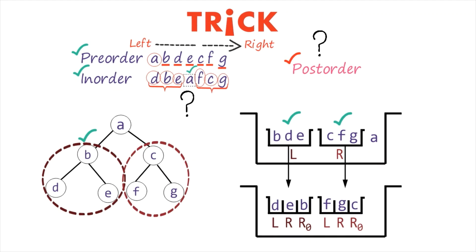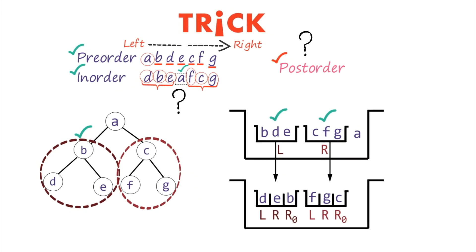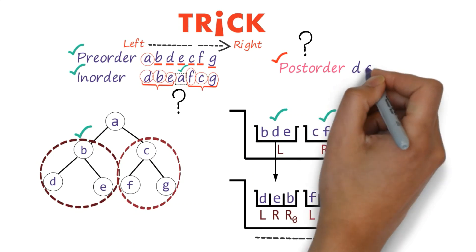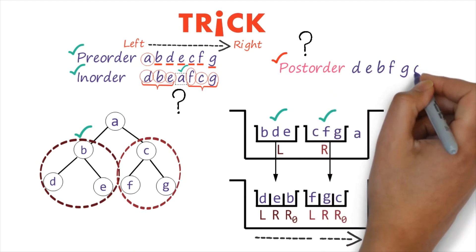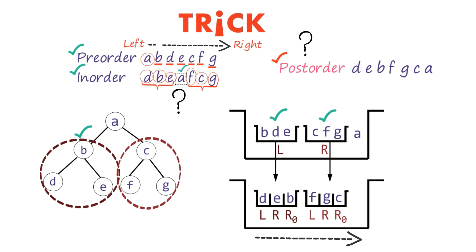The post-order traversal is obtained by reading left to right: D, E, B, F, G, C, and A. So this is the post-order traversal of the given tree. You can understand what our next problem will be — definitely a post-order and in-order will be given, and we will have to convert it into pre-order.